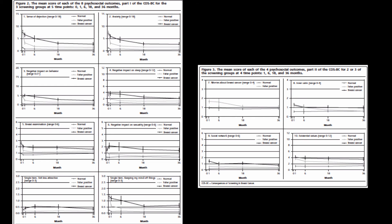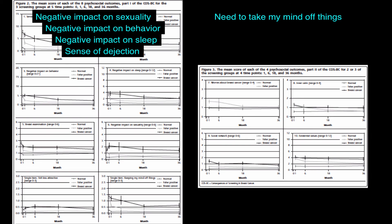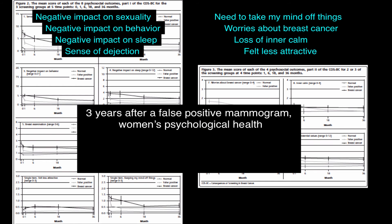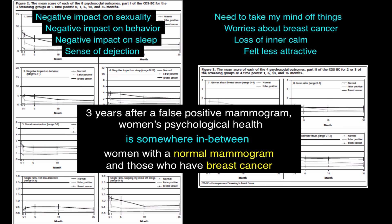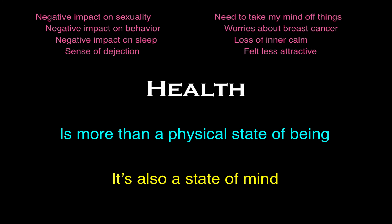They measured 12 psychosocial outcomes — things like negative impact on sexuality, negative impact on behavior, negative impact on sleep, sense of dejection, need to take one's mind off things, worries about breast cancer, loss of inner calm, and felt less attractive. In each case, the picture is pretty much the same: three years after a false positive mammogram, women's psychological health is somewhere in between women with a normal mammogram and those with breast cancer. It's important to remember that health is more than a physical state of being — it's also a state of mind, and we have to be careful not to undermine that.